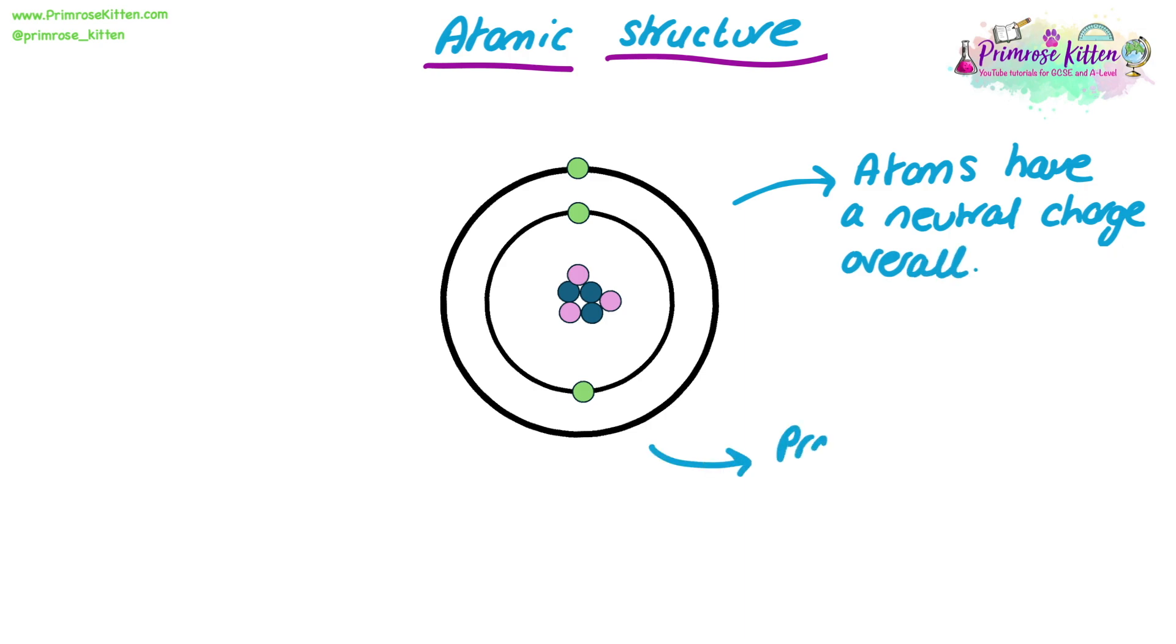Within an atom, protons and electrons are always equal. If there are five protons in the nucleus, there are five electrons on the outer shells. These numbers must always balance in an atom.